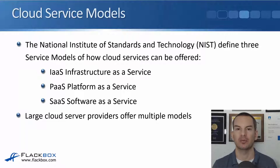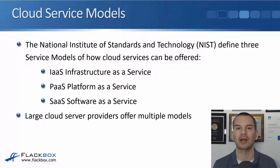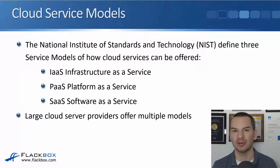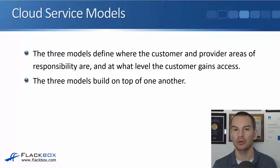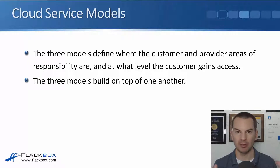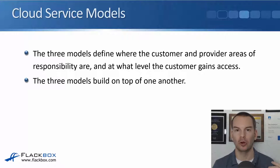Large cloud service providers will offer multiple models, not just one. Small providers might specialize in just one, but large providers like Amazon Web Services and IBM will offer all three. The three models define where the customer and provider areas of responsibility are and at what level the customer gains access. The three models build on top of one another.